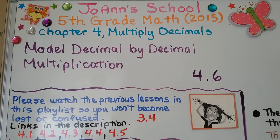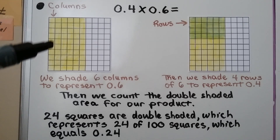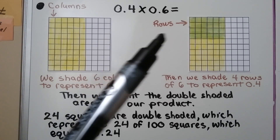Lesson 4.6: Model Decimal-by-Decimal Multiplication. We can use a sheet of graph paper or a grid of 100 squares to model multiplying a decimal by a decimal. We can shade columns of squares with one color for one factor and rows of squares with a different color for the other factor. Then we count or multiply to find how many small squares are shaded twice. Remember, columns go down and rows go across.